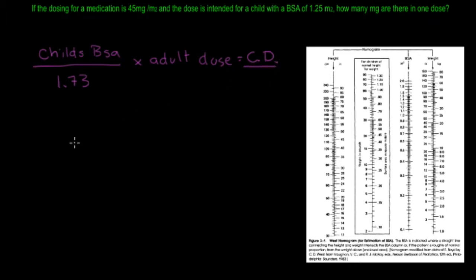So if the dosing for a medication is 45 milligrams per meter squared, and the dose is intended for a child with a BSA of 1.25 meters squared, how many milligrams are in one dose?